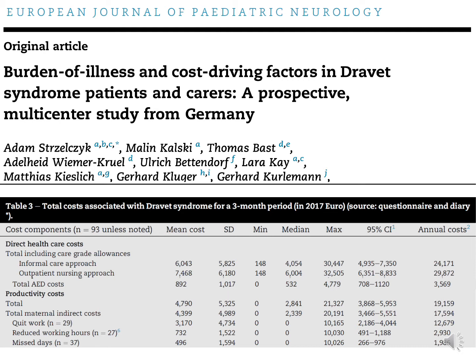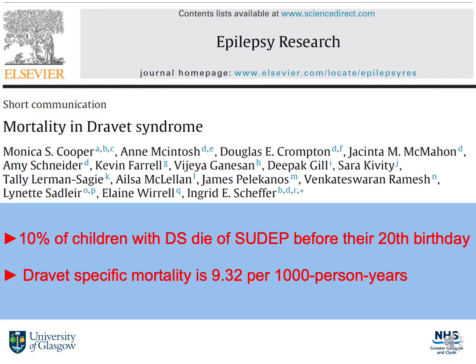We also know that there's a significant burden of illness associated with Dravet syndrome. A study by Strzelczyk et al. looked at the costs to the individual and society of patients with Dravet syndrome, showing that there are significant direct health care costs, but also indirect health care costs due to loss of income of a parent, for example. And we know that the mortality in Dravet syndrome is really high — about 10% of children with Dravet syndrome die of sudden unexpected death in epilepsy before their 20th birthday, and the mortality is 9.32 per 1,000 person years.